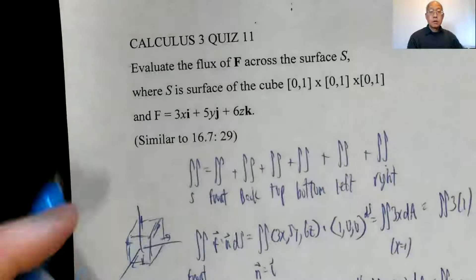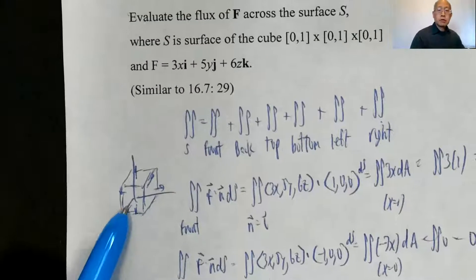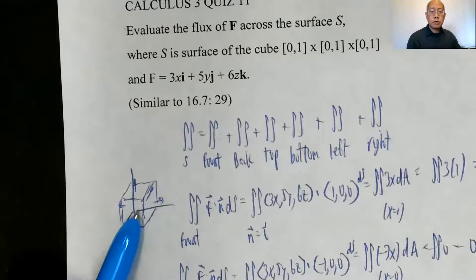Here's a solution to calc 3 quiz 11, the flux of F across the surface S. Okay so we have this cube [0,1] × [0,1] × [0,1].